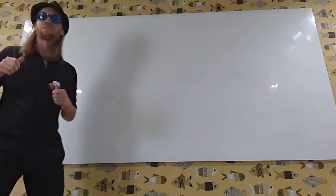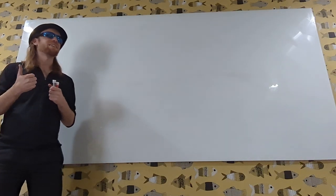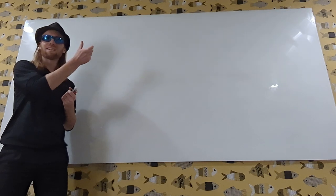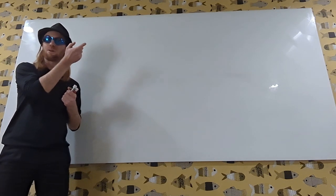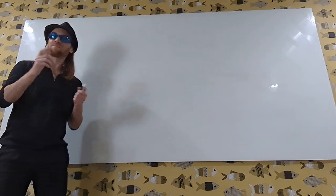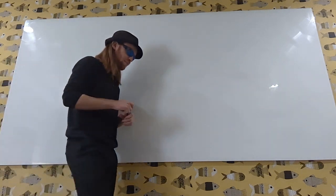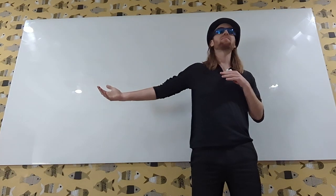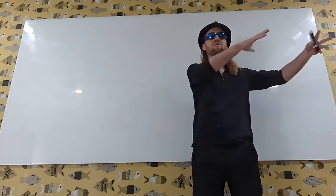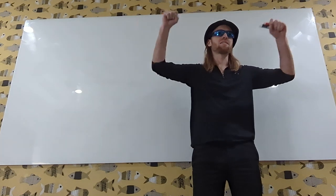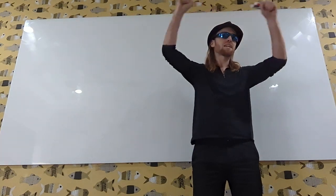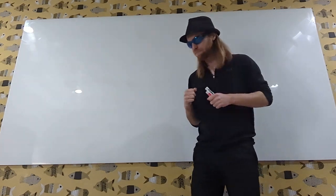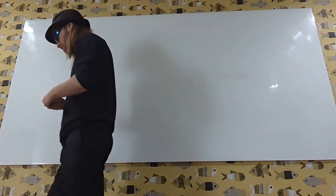Two main topics for today. First, we're going to do wedge products. When you do integrals and you have that little bit at the end that's like dx, dy, dz, that thing is secretly a wedge product. After that, we're going to talk about how various function operations match to various matrix operations, and that'll give us a way of contextualizing a bunch of the stuff we've talked about in the previous lectures.